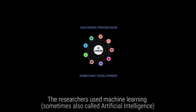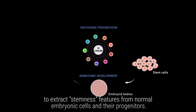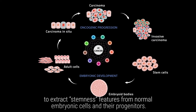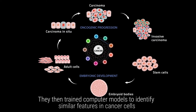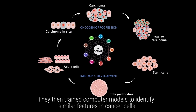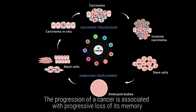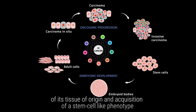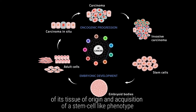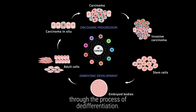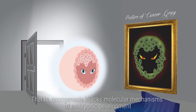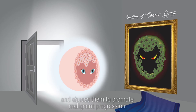The researchers used machine learning — sometimes also called artificial intelligence — to extract stemness features from normal embryonic cells and their progenitors. They then trained computer models to identify similar features in cancer cells from more than 30 tumor types. The progression of a cancer is associated with progressive loss of its memory of its tissue of origin and acquisition of a stem cell identity.